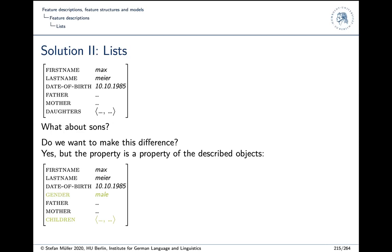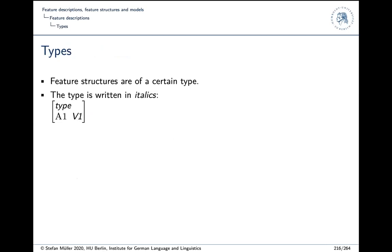We will see things like that when we look at HPSG. In HPSG we have a head daughter and other daughters, with pointers to the head daughter — something like the mother example — and other daughters in a list.